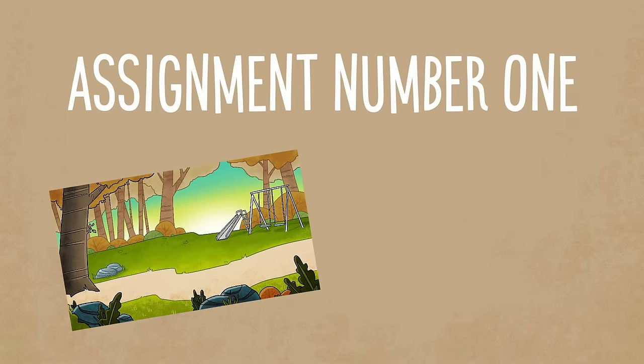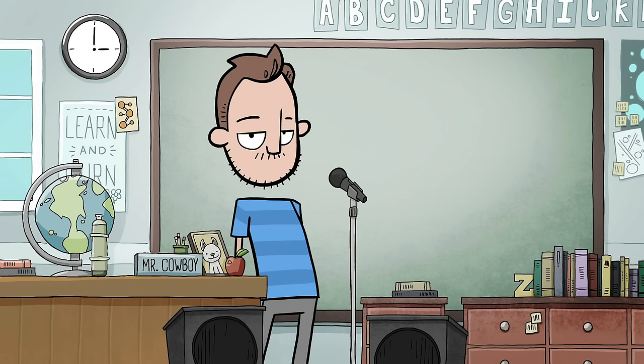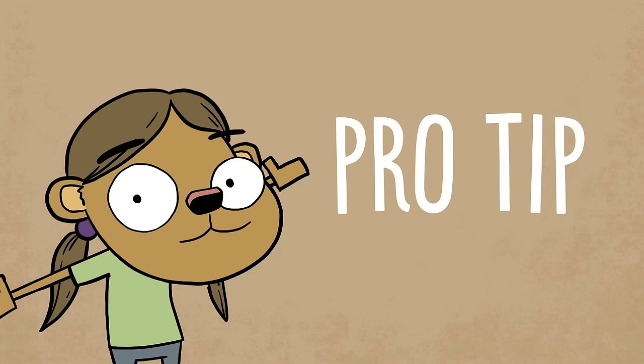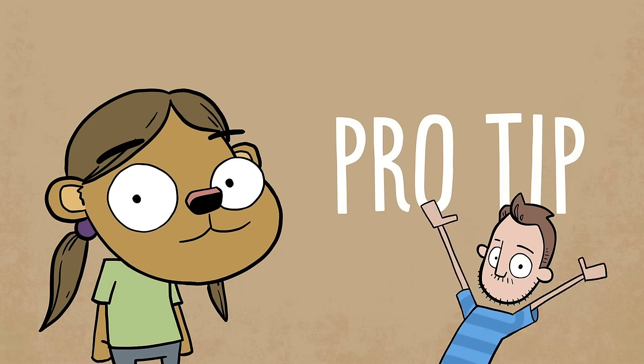Assignment number one: I want you to go outside and look at the world around you. I want you to start looking at the world like artists. I want you to find objects and think about how you would make those objects and construct those objects using the shapes we've talked about today. Pro tip: this can be hard to do if you're a beginner, especially if you're not used to drawing in perspective. We'll be covering that in a future episode, hit subscribe.